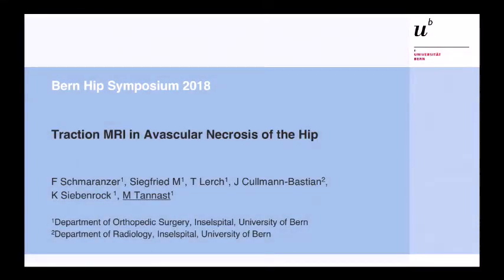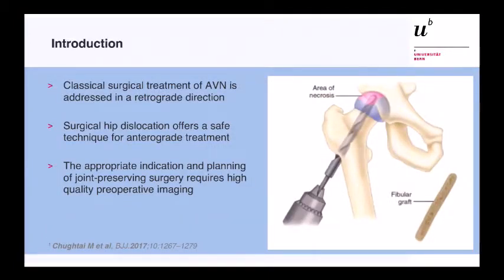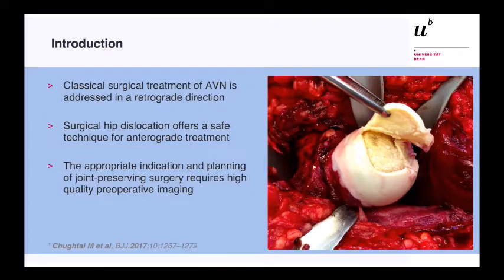Now we've heard something about the origin and we would like to have a closer look at how this looks on an MRI. I would like to report our results about the traction MRI in AVN of the hip. I especially want to thank Florian Schmarantzer who did a lot of work evaluating all the cases included here. The appropriate indication and planning of joint-preserving surgery requires high quality preoperative imaging, and this is what I would like to present.